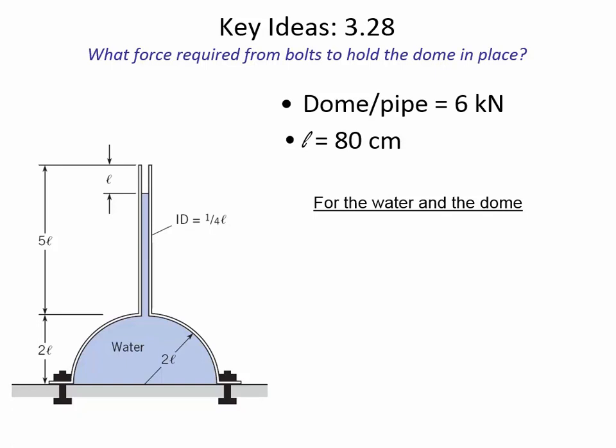So you find the depth, the pressure at that depth, and then this is a matter of finding a force balance. They're asking what force is required from the bolts to hold the dome in place — these bolts are pushing down on the dome. What do you think would happen if these bolts weren't here? If you had a metal dome and water in it but you weren't clamping down on it, the water's going to leak out the edge, so that's why they're clamping.